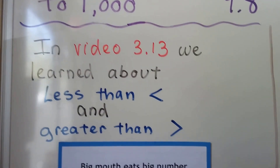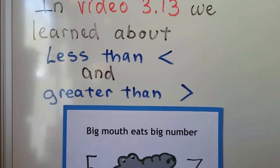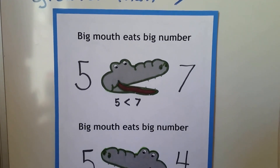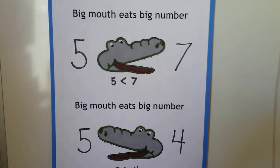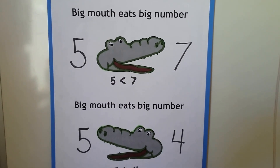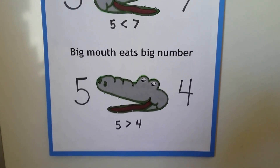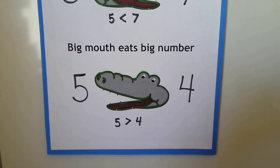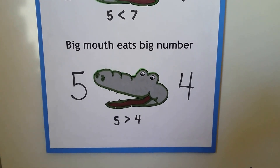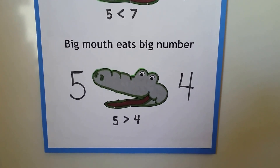Back in video 3.13, we learned about less than and greater than. Remember the big mouth eats the big number? 7 is larger than 5, so 5 is less than 7. And 5 is larger than 4, so 5 is greater than 4. The big mouth faces like it's going to eat the big number.